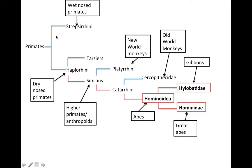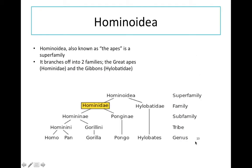We start at the primates and work our way down. Some terms you may be familiar with, others not, so I've put their common names up here to help. You've got hominoidia here, which is the apes, and that splits off into hylobatidae, which is the gibbon, and hominidae, which are the great apes.